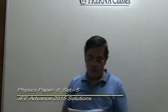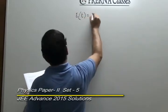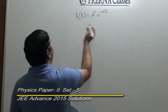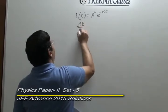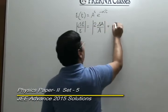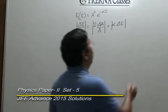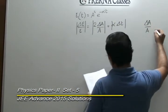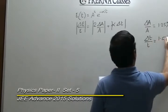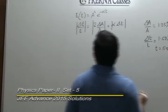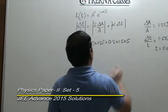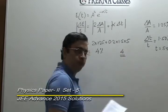The integer-type question gives an expression for energy E. To find the percentage error, take the log of both sides and differentiate. This gives an expression involving ΔA/A = 1.25%, ΔT/T = 1.5% with T = 5 seconds, and α = 0.2. Substituting these values yields a percentage error of 4%, so the answer is 4.